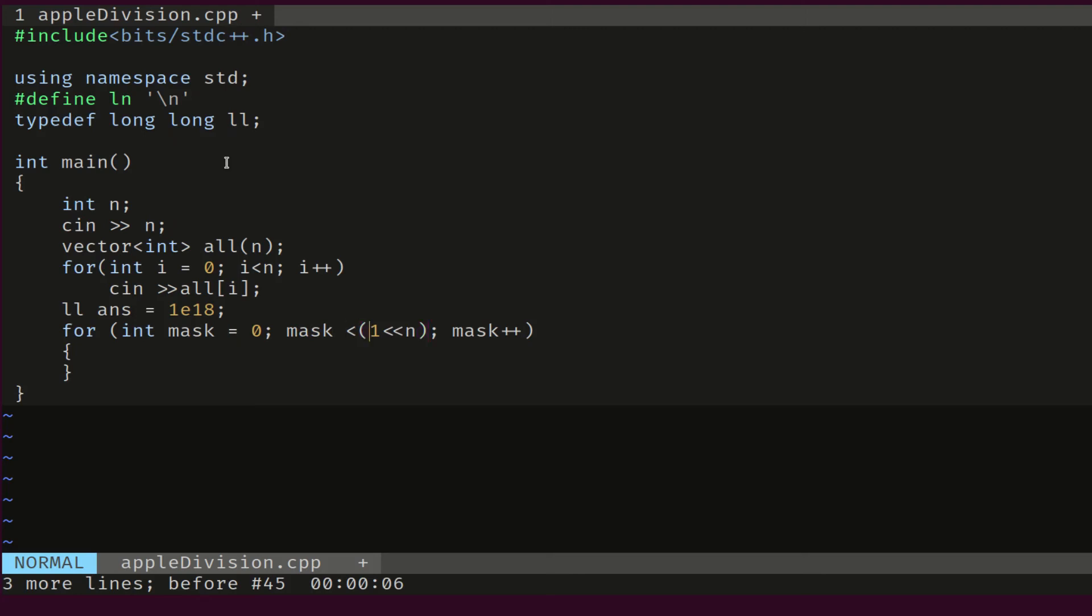Basically each time we update this value answer, it becomes less than what it was. As we said, we're gonna go through all the masks from 0 to 2 to the n. Basically, each mask here represents a partition of the elements into two groups A and B.